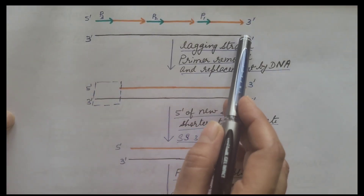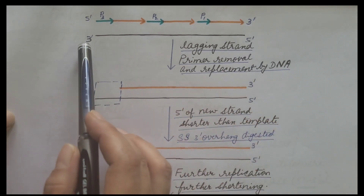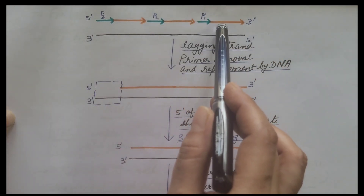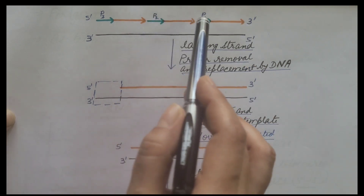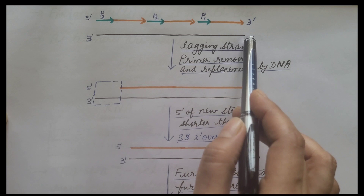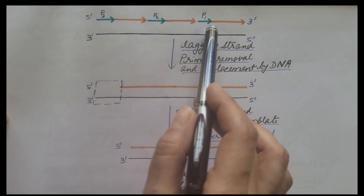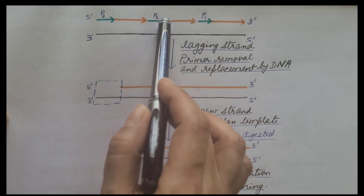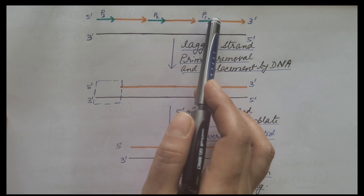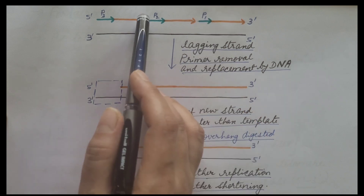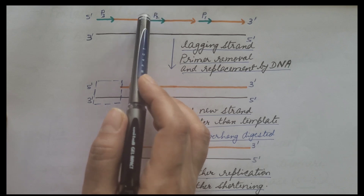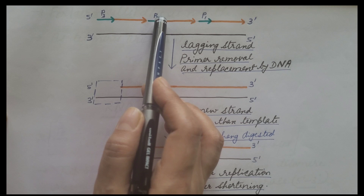The lagging strand is synthesized as Okazaki fragments, so one primer is required for each fragment. Once the entire template is replicated, the primer is removed and a gap is created. This gap is filled by DNA synthesized by DNA polymerase delta, which requires a 3'-OH group for strand extension. Where the 3'-OH group is present, it extends the strand and fills the gap, and the nick is sealed by DNA ligase.